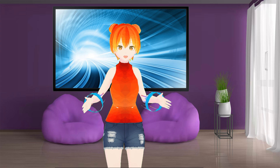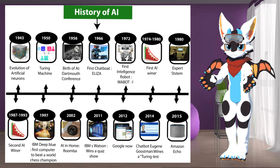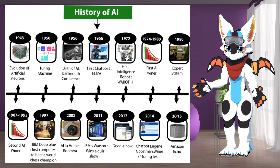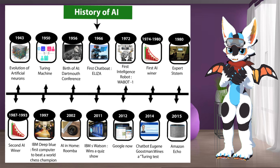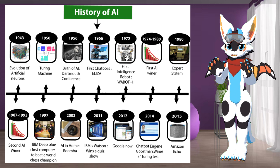Can you tell me more about the history of AI? The history of AI is a long one, but in short, in the late 1940s and 1950s, a group of scientists from different fields like mathematics, psychology, engineering, economics, and political science began to discuss the possibility of creating an artificial brain. The field of artificial intelligence research was officially founded as an academic discipline in 1956.